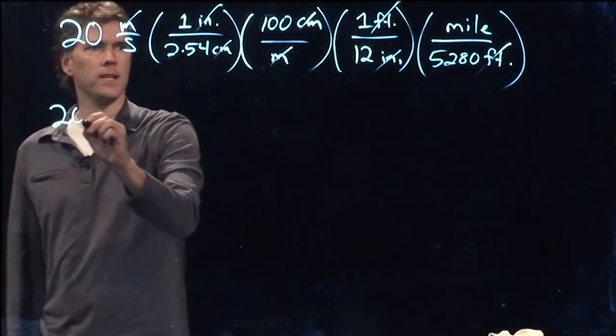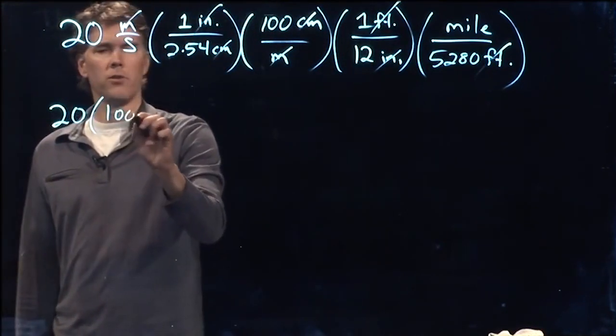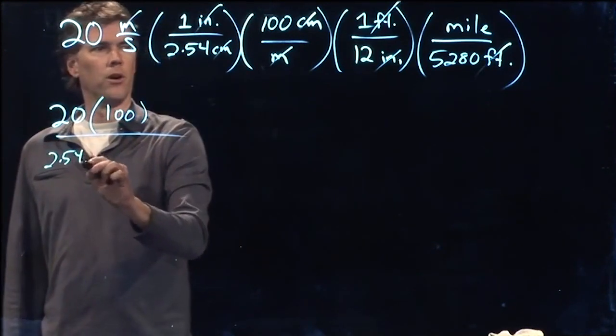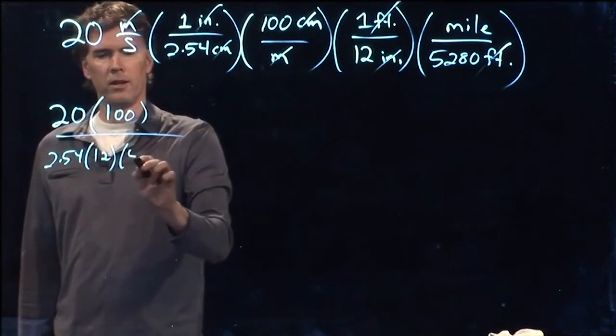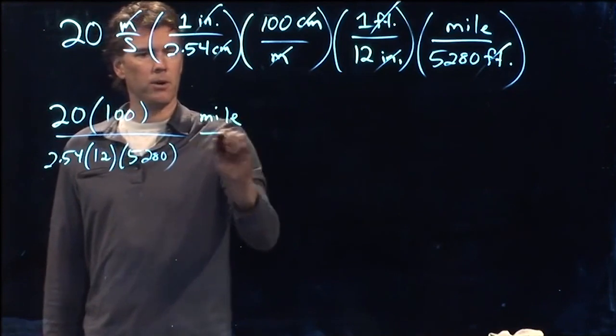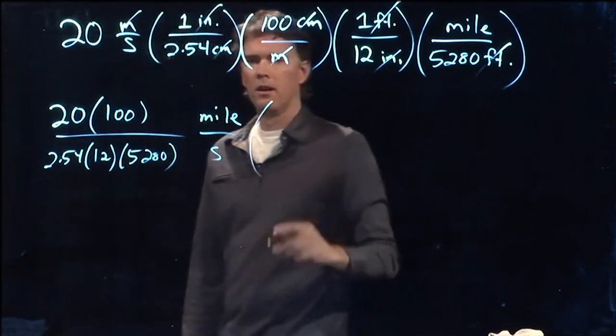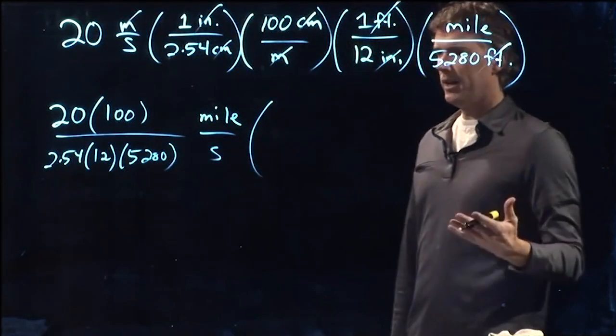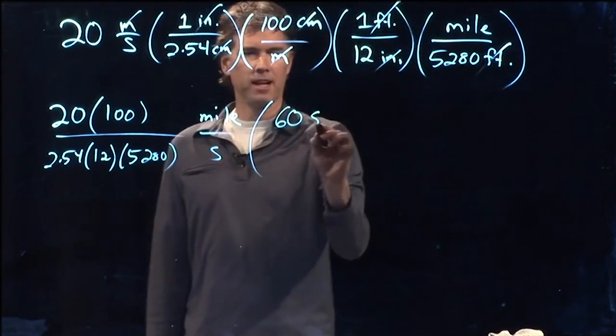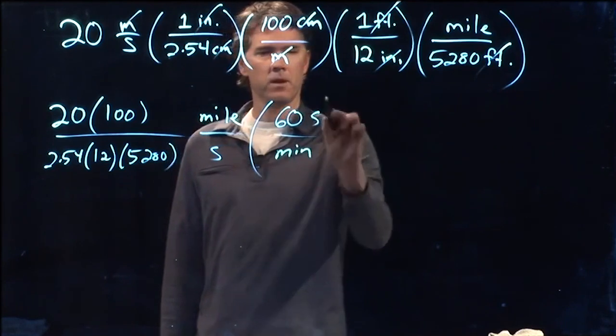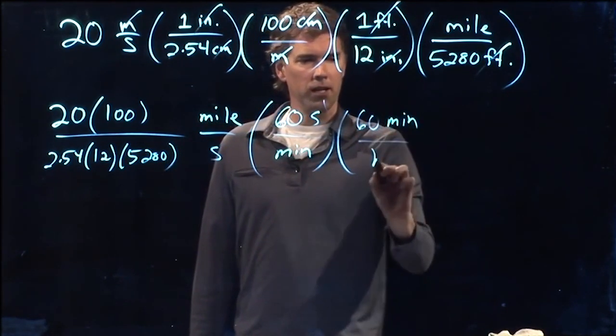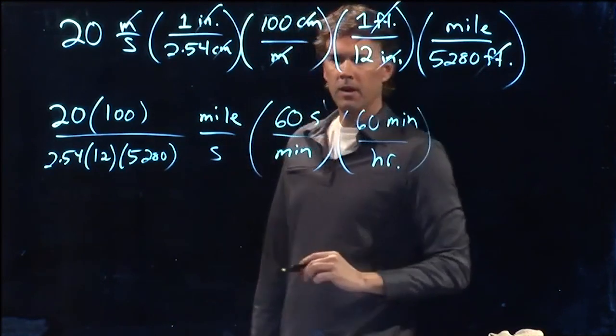So we've got 20 times 100 divided by 2.54 times 12 times 5280. We are in miles per second. That's good. Now we got to get rid of seconds. So 60 seconds in a minute, 60 minutes in an hour.